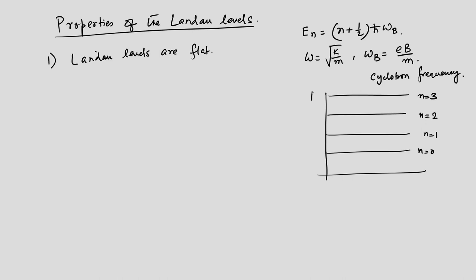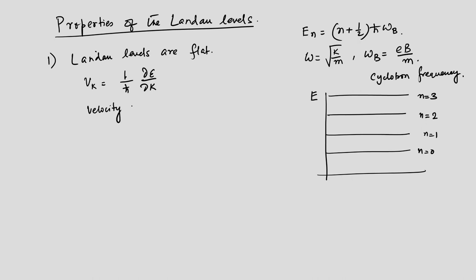When I say these levels are flat, I mean they have no dispersion. From band theory, v(k) = (1/ħ) ∂E/∂k depends on the slope of the band energies. Since these bands are completely flat, the velocities are zero — the velocity of the electrons is zero — and therefore the kinetic energy of the electrons is zero.